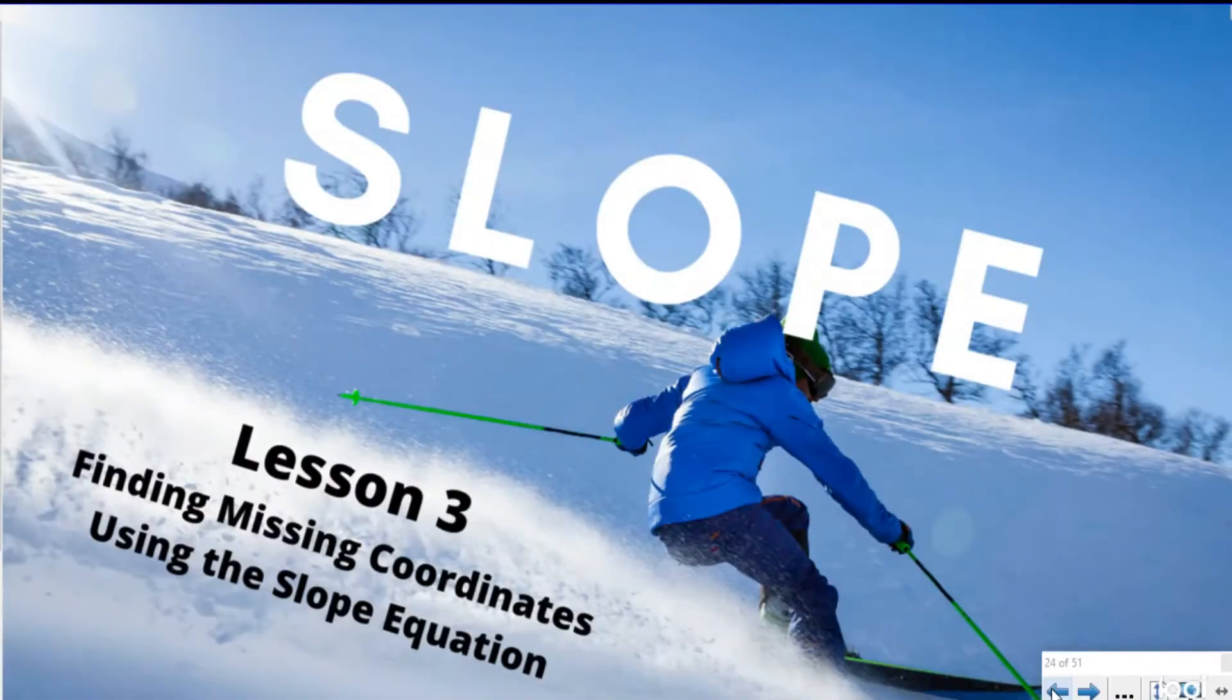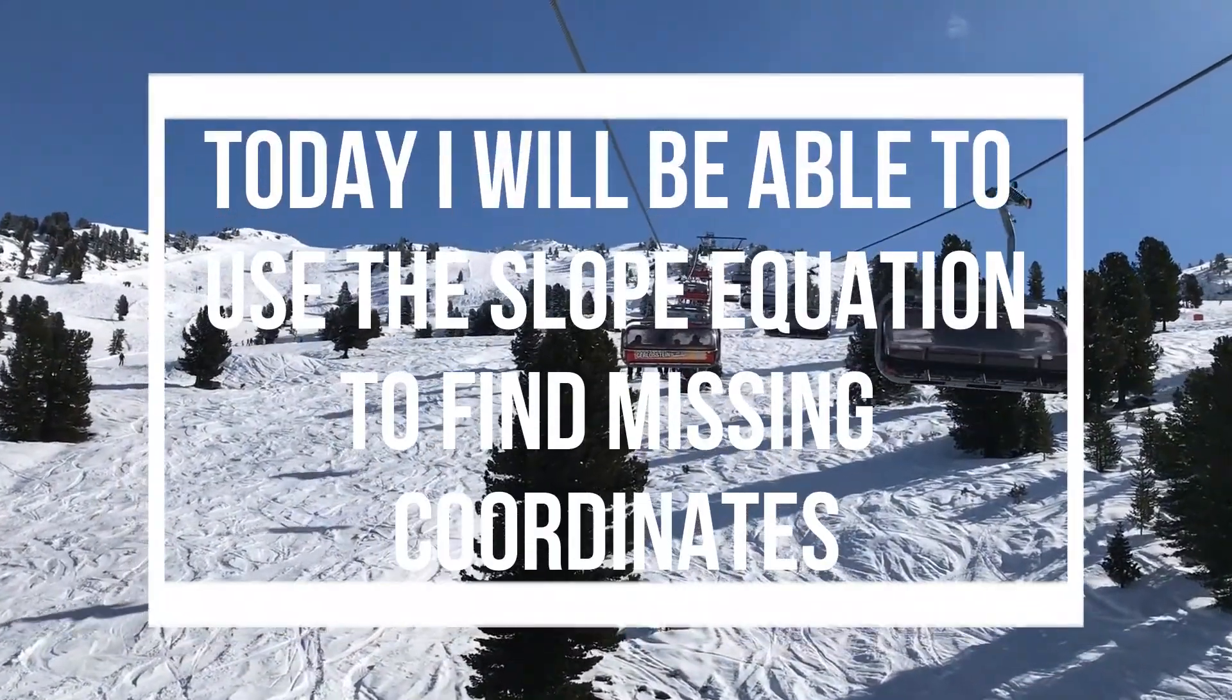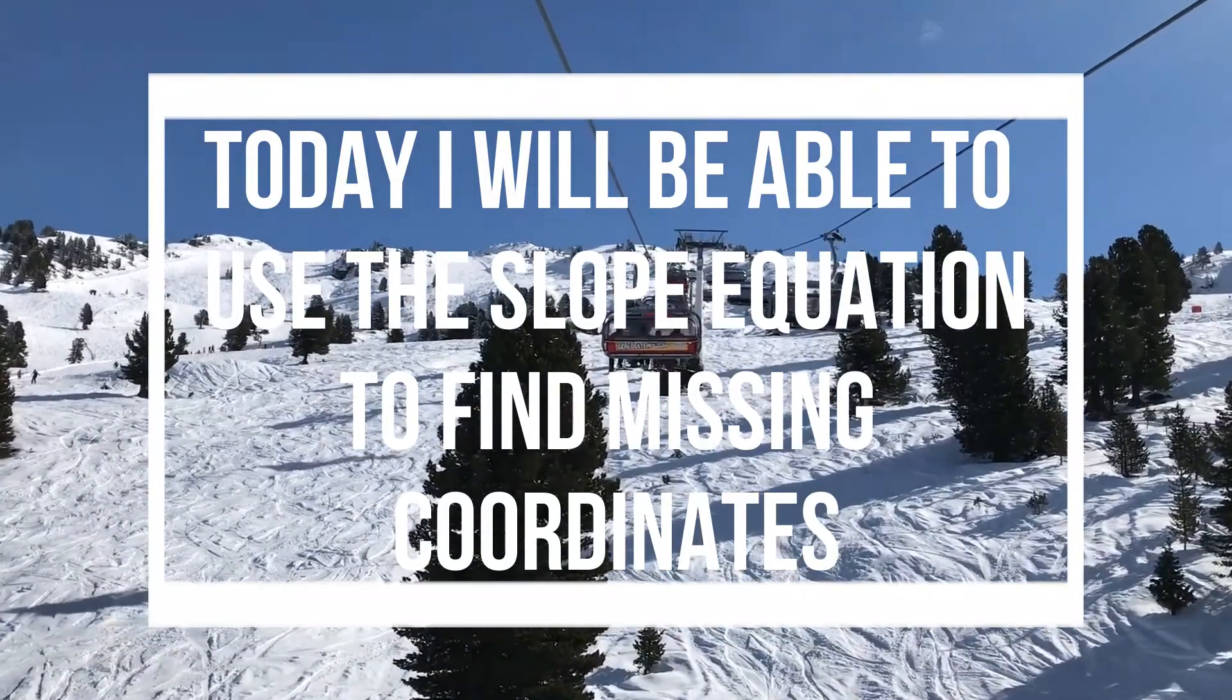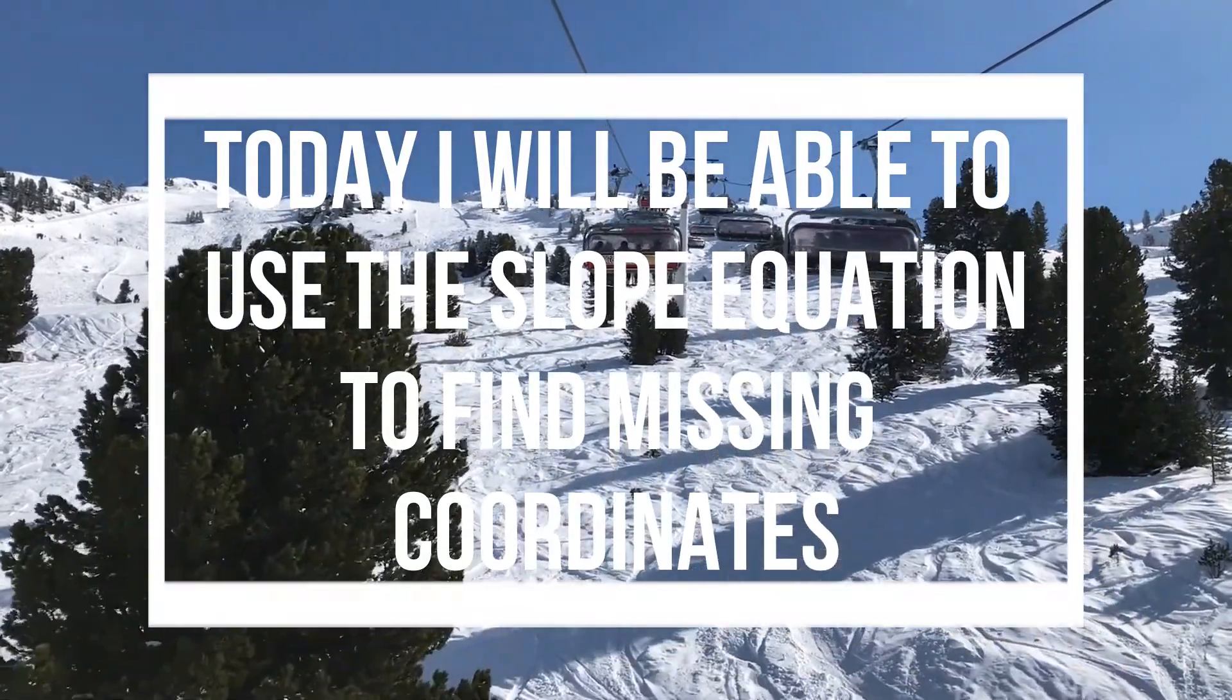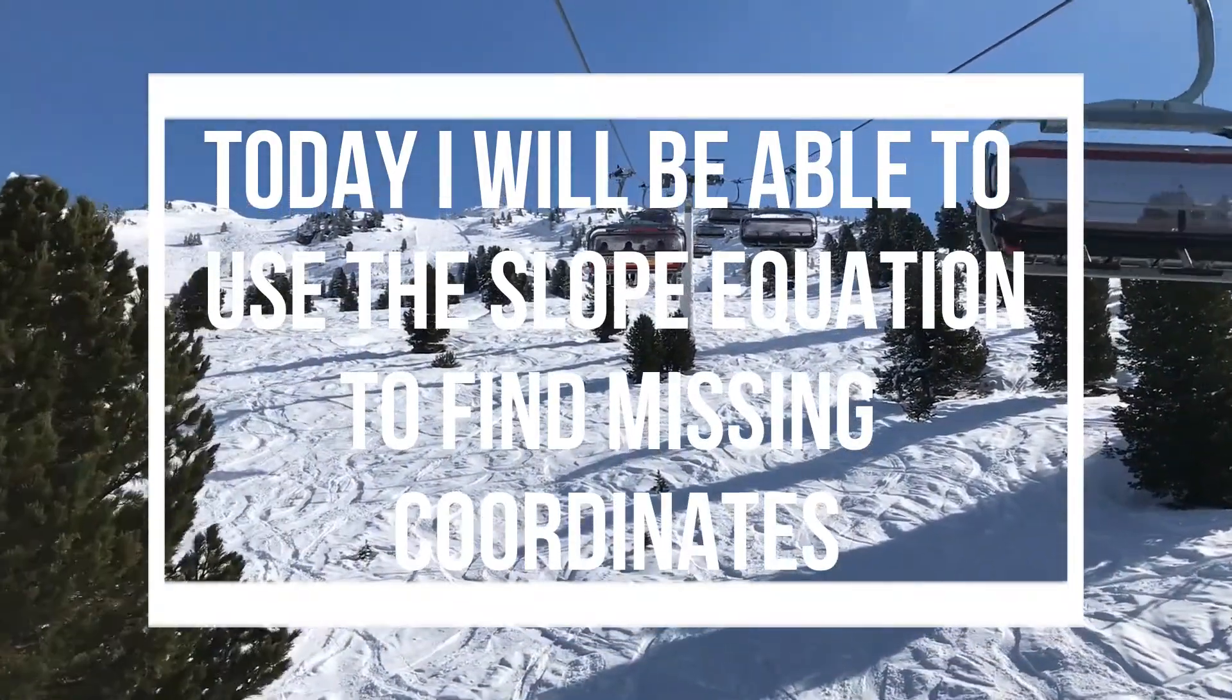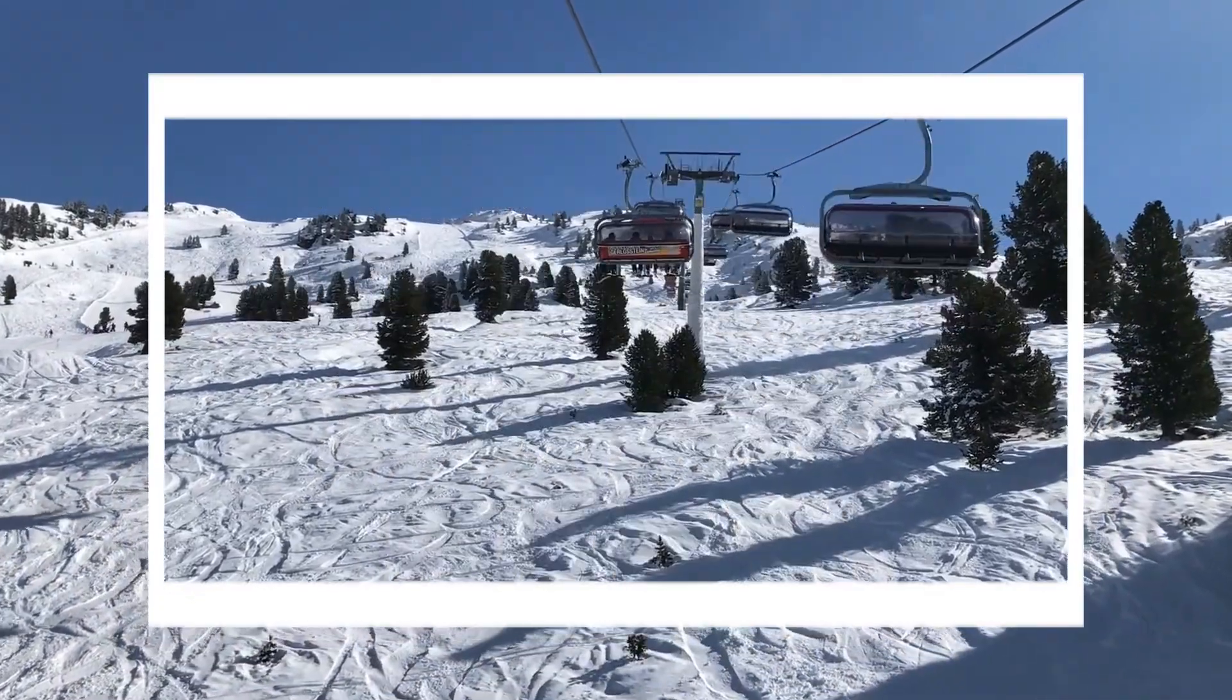Thank you Klaus for the snowy introduction. I hope you stay warm out there in that crazy weather. Today we are, as Klaus said, looking at our third lesson in our slope playlist, and we will be helping Klaus find his skis while we find missing coordinates using our slope equation. So let's get on the ski lift and see what our objective is today. Today I will be able to use the slope equation to find missing coordinates. So last lesson you learned about the slope equation and where it came from and why we use it, and today we're going to be using that to search for missing coordinates.